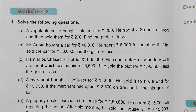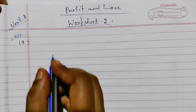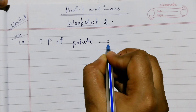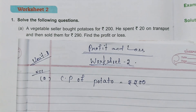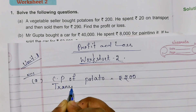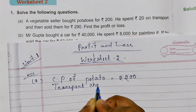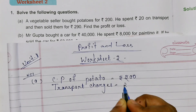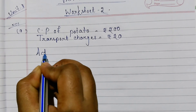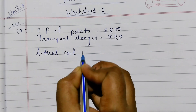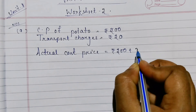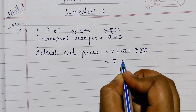Actual cost price of potatoes equals cost price of potatoes plus transport charges. Cost price of potatoes is 200 rupees, transport charges equal 20 rupees. Then we find actual cost price: actual cost price equals cost price plus transport charge, which is 220 rupees.